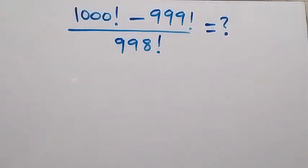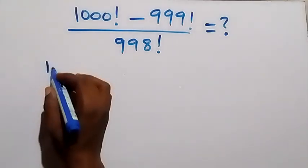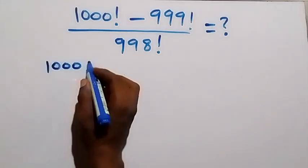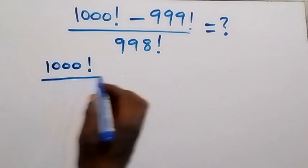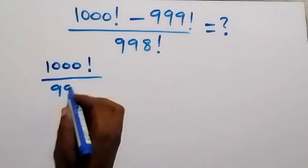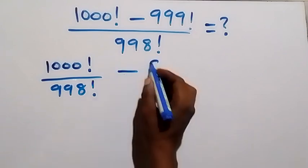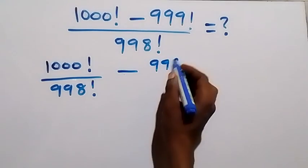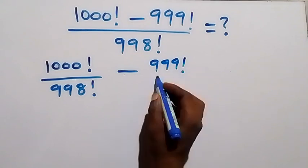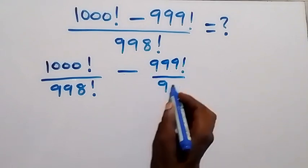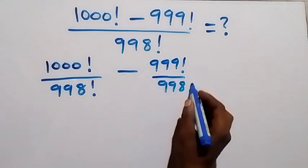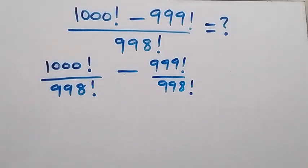Here, let's separate this as 1000 factorial divided by 998 factorial, then minus 999 factorial divided by 998 factorial. So we can separate this into two fractions like this.